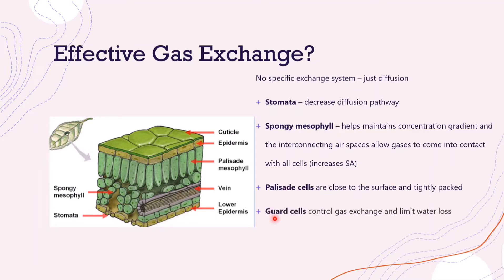Then we have our guard cells, which control the size of the stomatal pore. This means they control gas exchange and limit water loss. Gas exchange is controlled because the gases have to diffuse through the stomata, so if the guard cells control the size of the stomata, they control gas exchange.